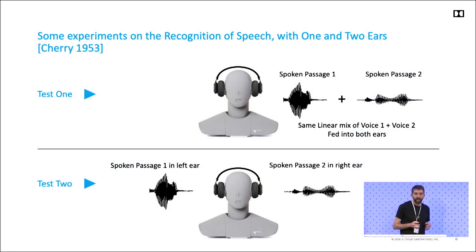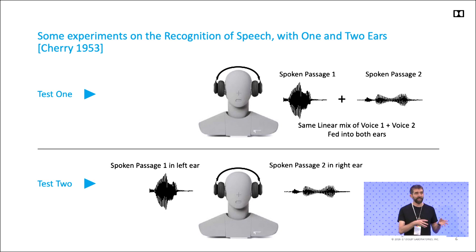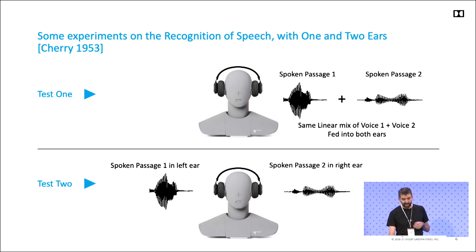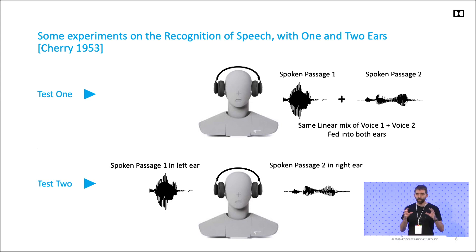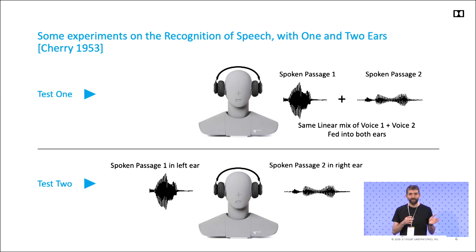One of the earliest studies looking at this was by Colin Cherry in 1953. Cherry coined the term the cocktail party problem — essentially, how do we understand communication in a crowded, noisy environment where everyone's speaking. He did early experiments to look at the impact of separation of voices. In the first test, he took two spoken passages, mixed them together, played them in headphones, and asked participants to read out passage one. They made a lot of errors and it was really difficult and stressful.